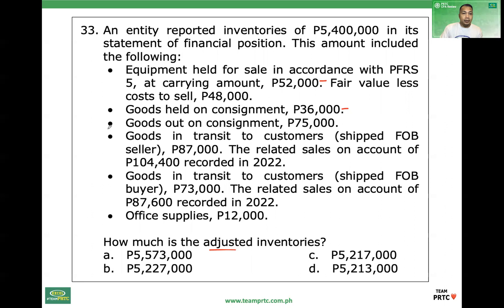Goods out on consignment — no adjustment, included properly. Goods in transit to customers shipped FOB seller — that is FOB shipping point. If FOB shipping point, it's sold already, so erroneously included. Minus — sold already while in transit.